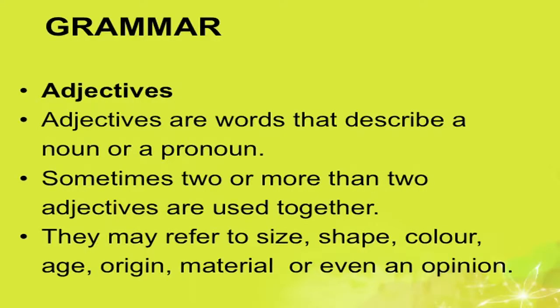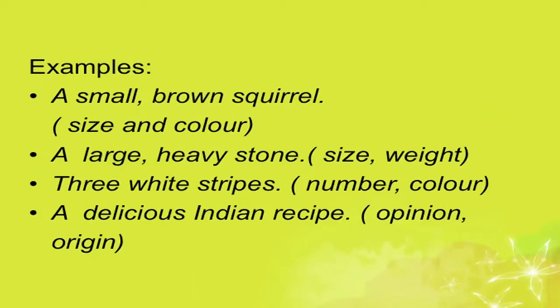Now let us come to the grammar section. Adjectives are words that describe a noun or a pronoun. Sometimes two or more adjectives are used together — they may refer to size, shape, color, age, origin, material, or opinion. For example: 'a small brown squirrel' — small is size, brown is color; 'a large heavy stone' — large is size, heavy is weight; 'three white stripes' — three is number, white is color.